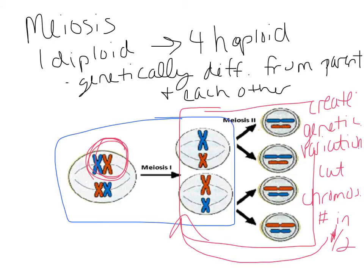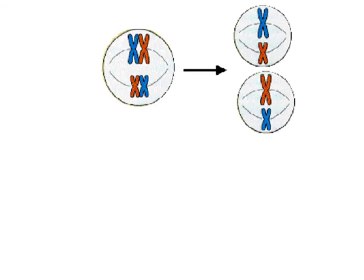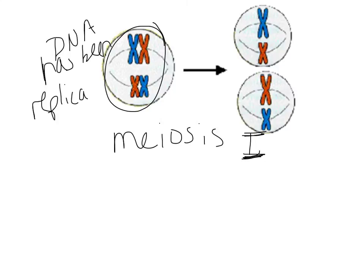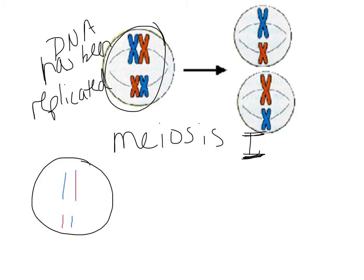Meiosis II is going to separate the chromatids. In meiosis I, we take these replicated chromosomes and separate the pairs — the homologous pairs. Prior to meiosis, the cell would have been a regular diploid cell that was non-replicated. When the cell went through the S phase of interphase, the DNA was replicated.